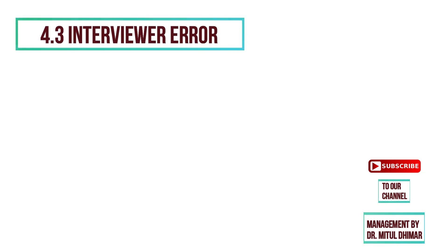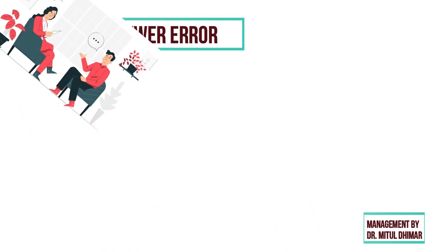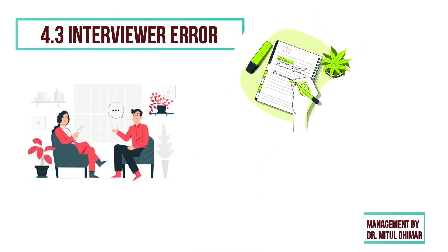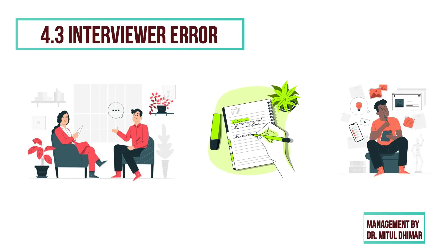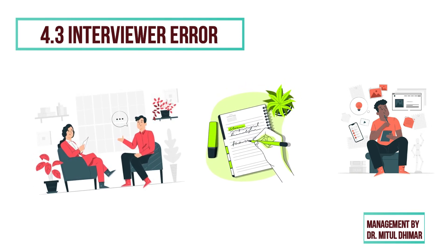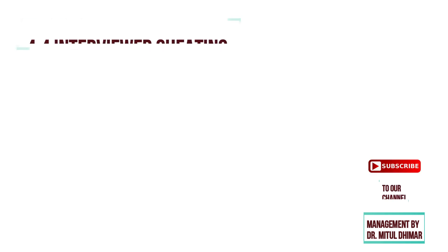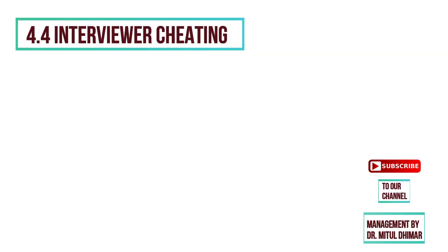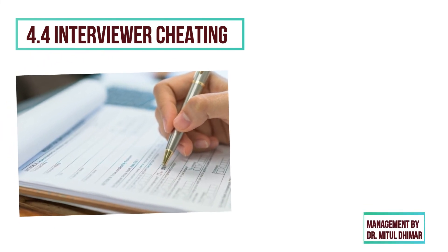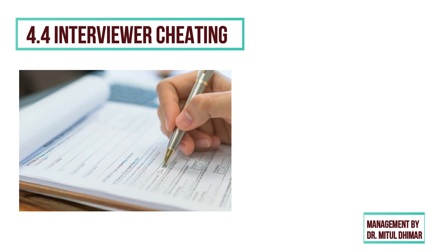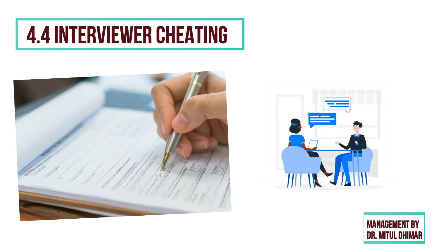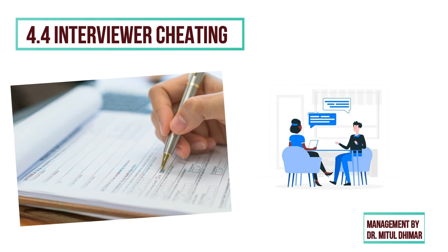Number 3: interviewer error. Interviewer error is introduced when interviewers record answers but check the wrong response, or are unable to write fast enough to record answers. Also, selective perception may cause interviewers to misrecord data that does not support their own attitudes and opinions. Number 4: interviewer cheating. Interviewer cheating occurs when an interviewer intentionally changes entire questionnaires or fills in answers to questions that have been intentionally skipped. Some interviewers cheat to finish an interview as quickly as possible or to avoid questions about sensitive topics.